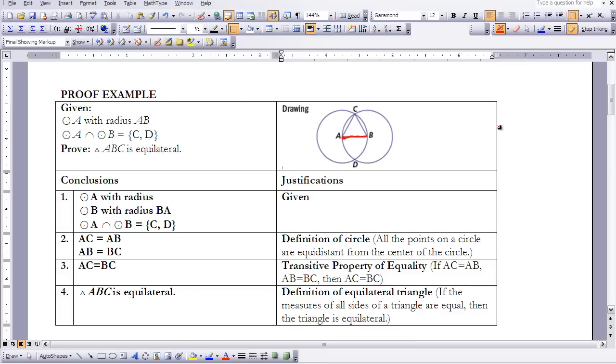So you're given a circle A that has radius AB, and then you're given circle B with radius BA. And then, we also know that circle A is going to intersect with circle B at points C and D. So that's our given information.